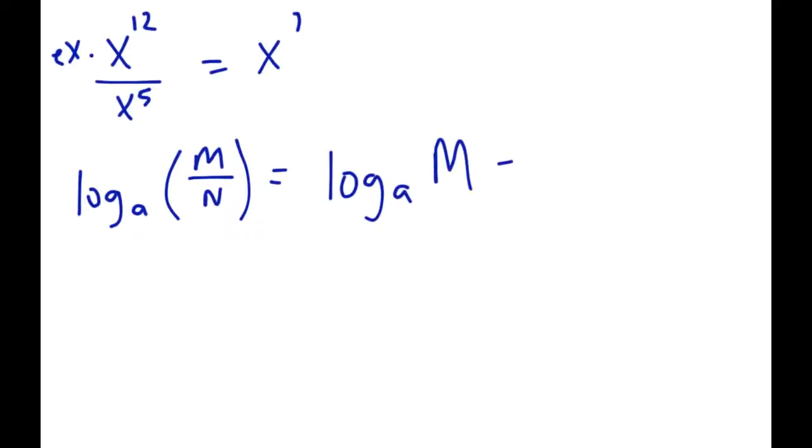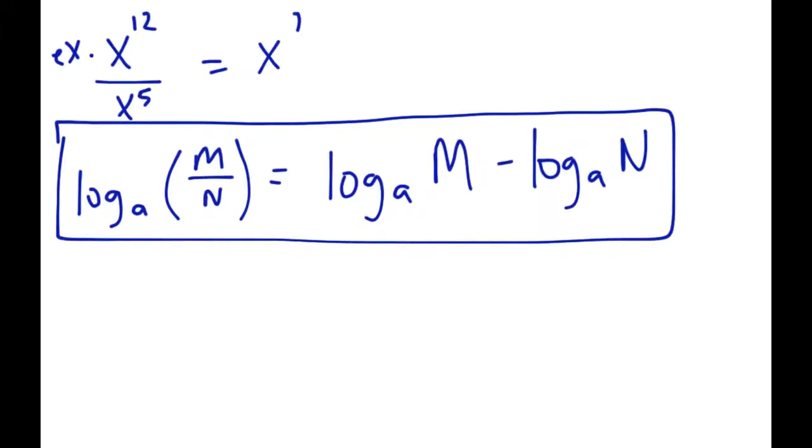Just like the multiplication law, in exponents we had a division law as well. For example, if I gave you x¹² divided by x⁵, in the exponent laws we did, when we solved that we actually subtracted. Because we're dividing, we subtracted exponents, we got x⁷. The same sort of log law applies here. If we have log_a(m/n), because they're being divided, we can break that apart and have it as a subtraction: log_a(m) - log_a(n). That's the second of the log laws on your formula sheet.